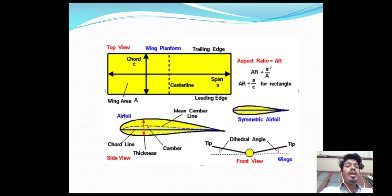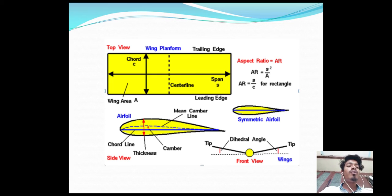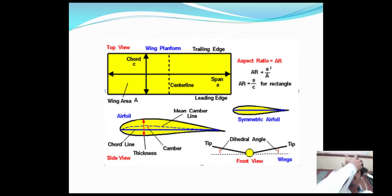The leading edge wing area and aspect ratio can be found as span squared divided by area, or S squared by C. For a rectangular airfoil, the aspect ratio is span divided by chord, S by C.